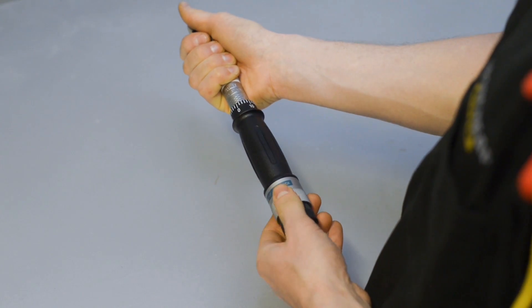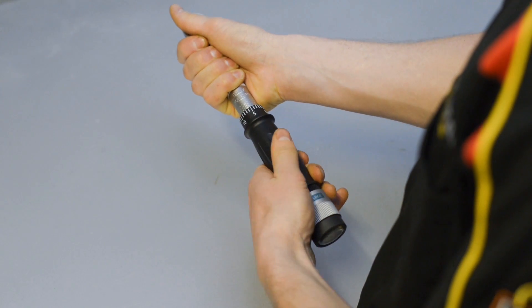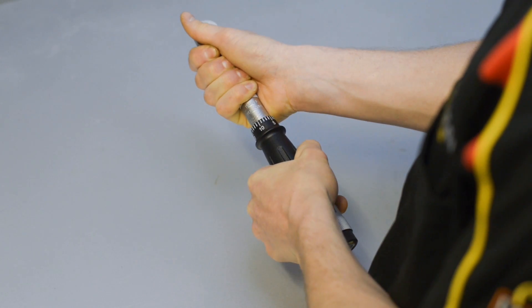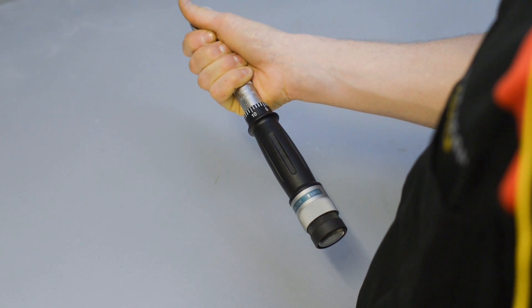As with the other two models, unlock the adjuster, twist the handle to the closest value, and then fine-tune the setting using the markings on the handle. Once your torque value is set, remember to slide the lock back into position.